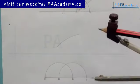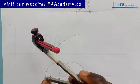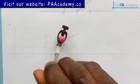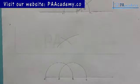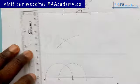Now with the same length, you come to point A. Draw an arc. From the point of intersection, which is right here.